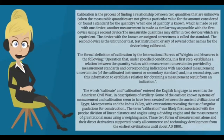The words calibrate and calibration entered the English language as recently as the American Civil War, in descriptions of artillery. Some of the earliest known systems of measurement and calibration seem to have been created between the ancient civilizations of Egypt, Mesopotamia, and the Indus Valley, with excavations revealing the use of angular gradations for construction.